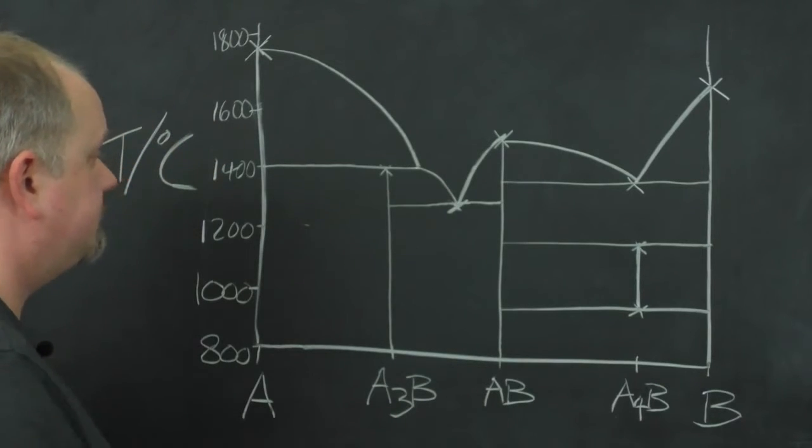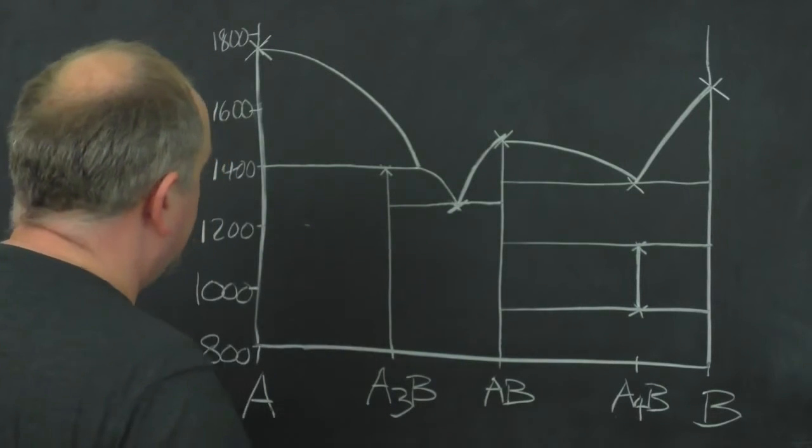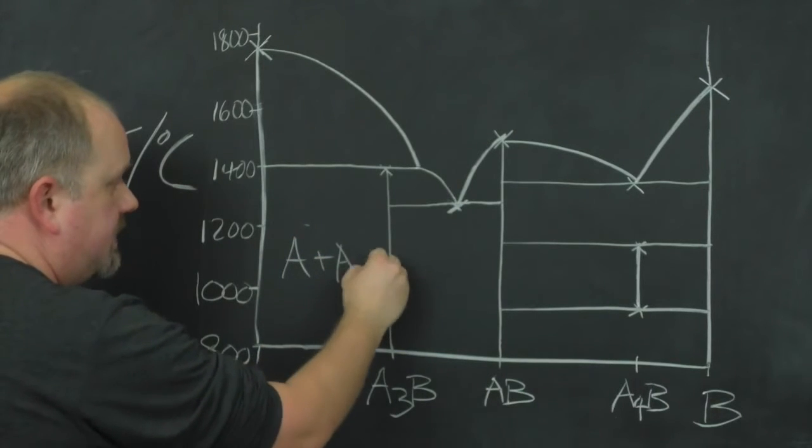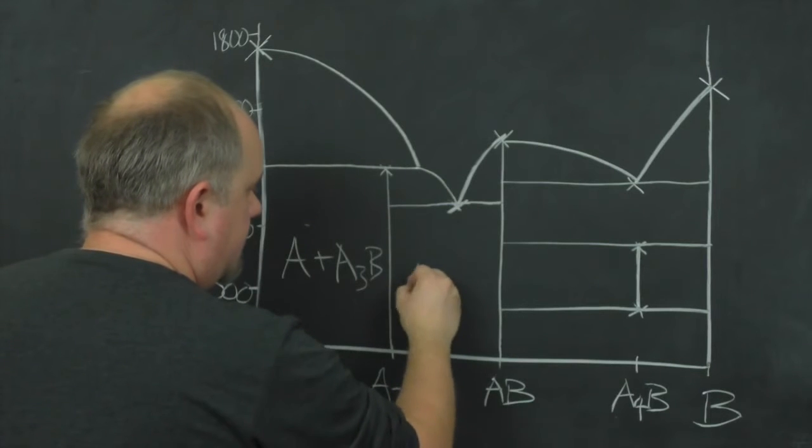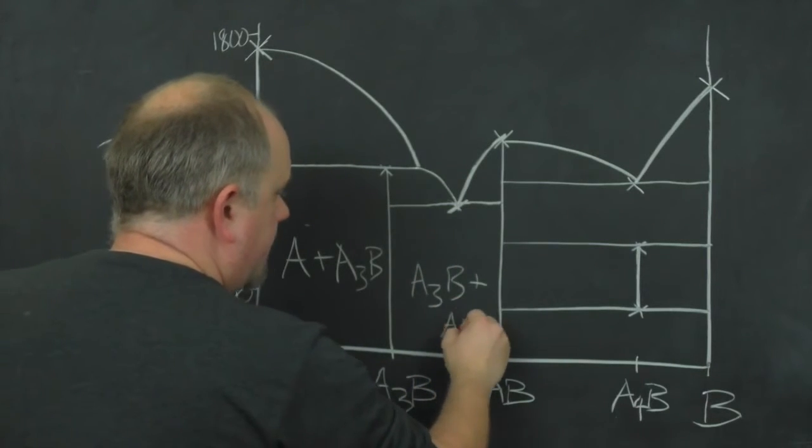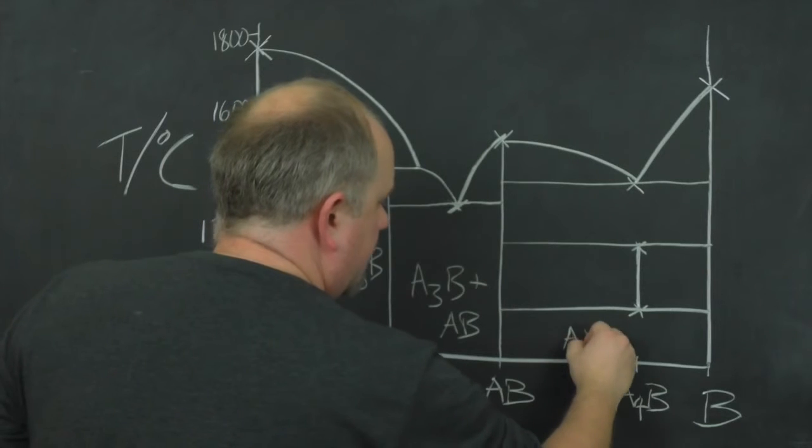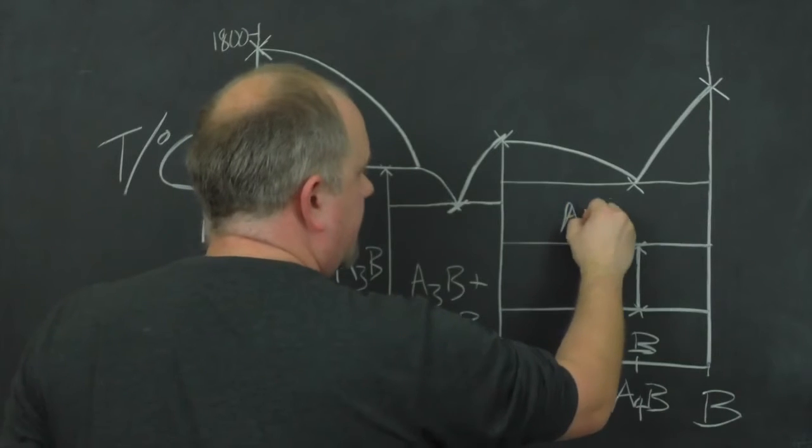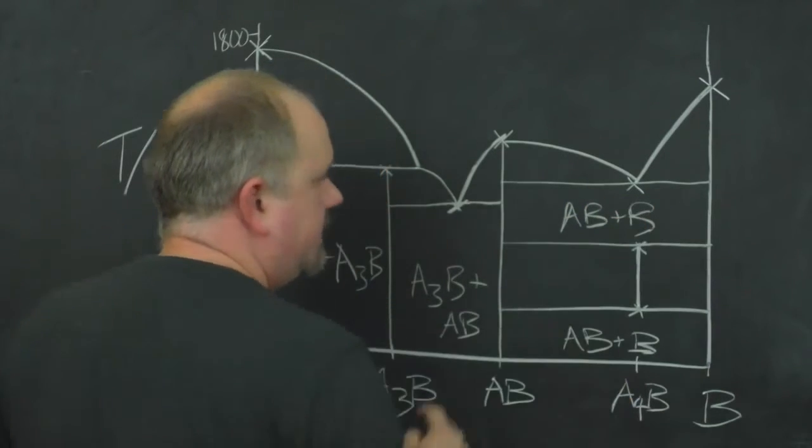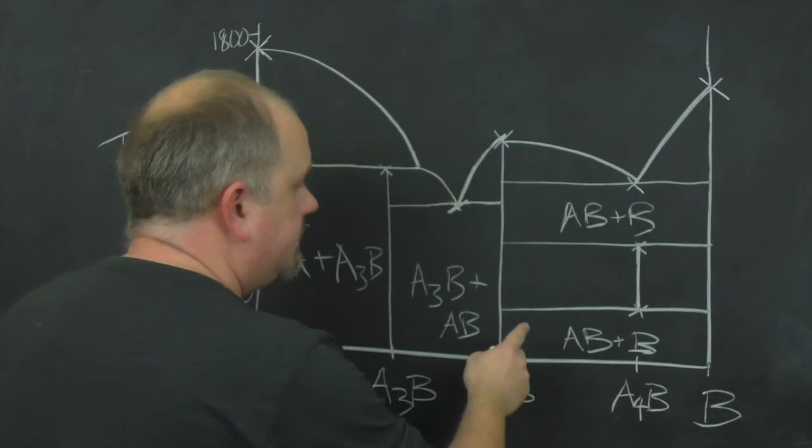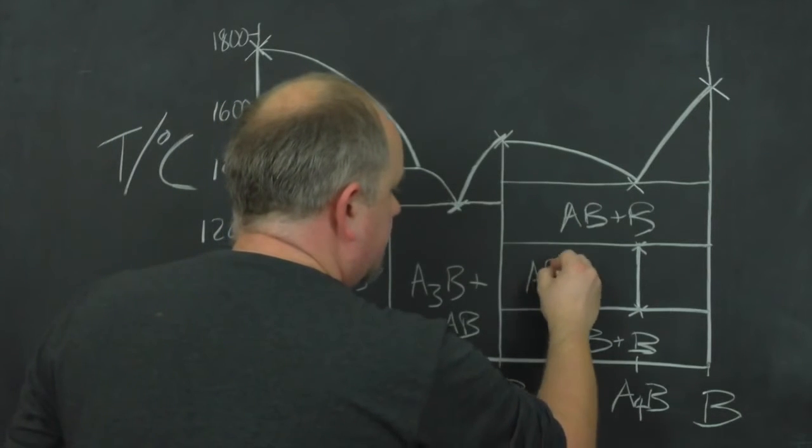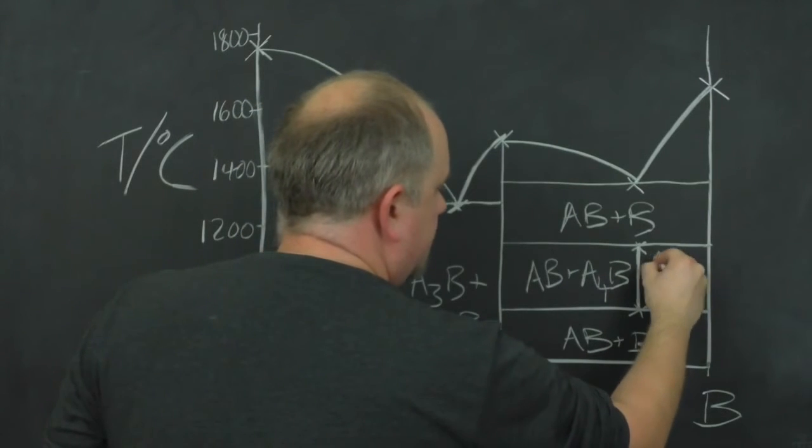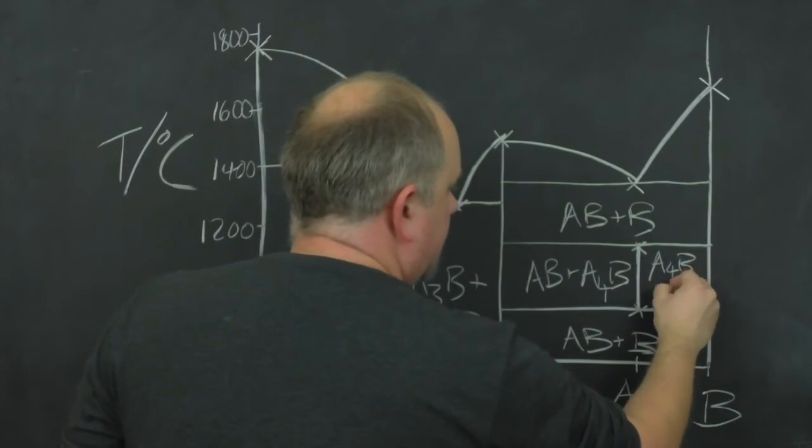And then we can just go through and label up some of these regions. So in here we have A plus A3B, A3B plus AB, AB plus B, and in here we have AB plus B. That's the part that often catches people out. Down here we have AB plus AB4, and in this little region here AB4 plus B.